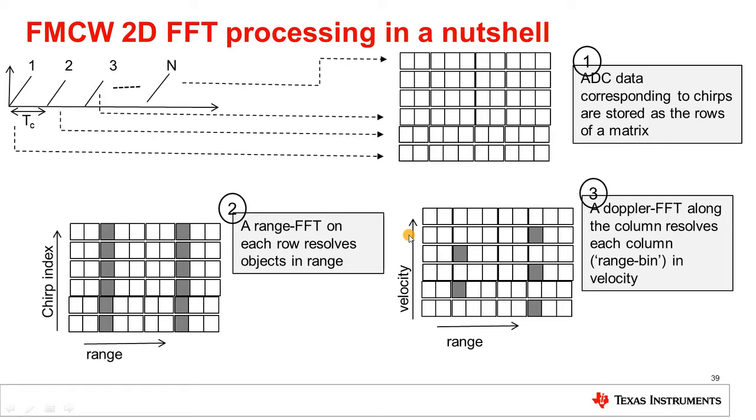So, this whole process of taking the range FFT followed by the Doppler FFT is, together, called the 2D FFT or two-dimensional FFT. And you will hear that term a lot in FMCW radar literature.